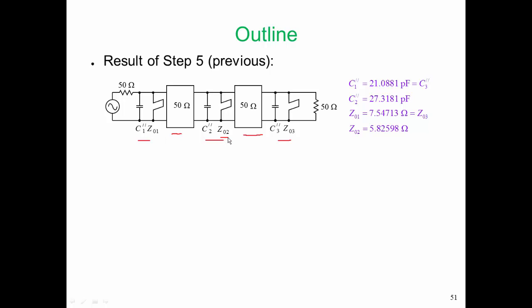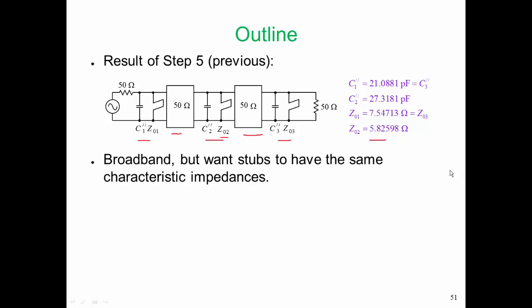But Z02 has a different characteristic impedance. It is 5.82. Now this is a broadband design, and that's good.